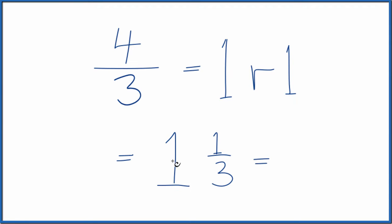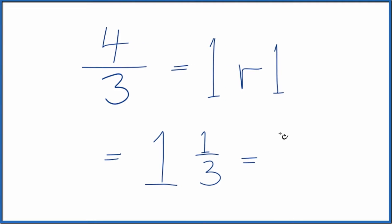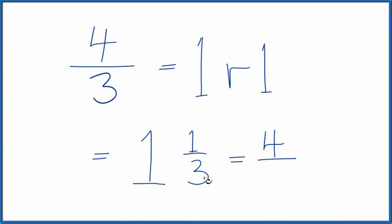We can check our work too, because we could say one times three, that's three, and three plus one, that gives you four. You bring the denominator across, four-thirds. That's what we had before.